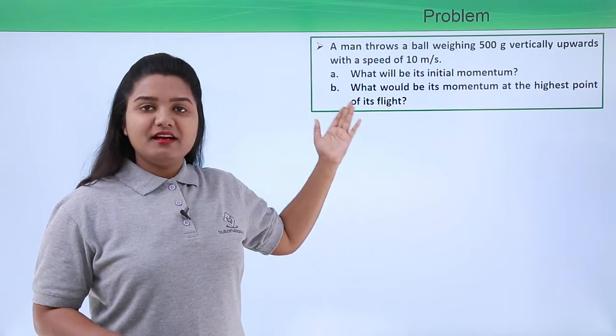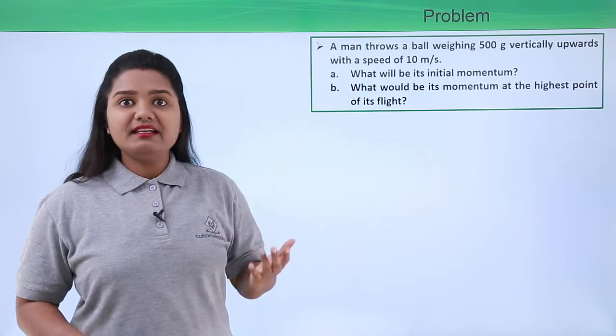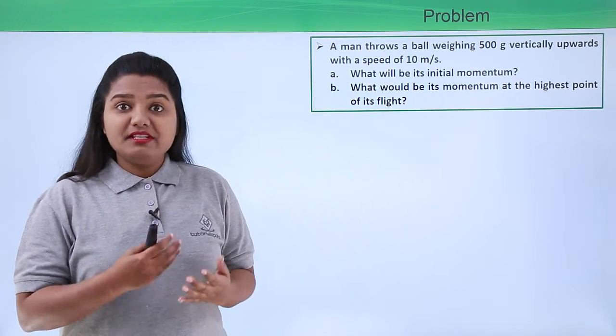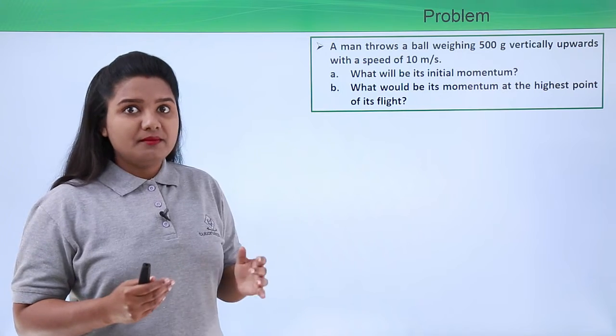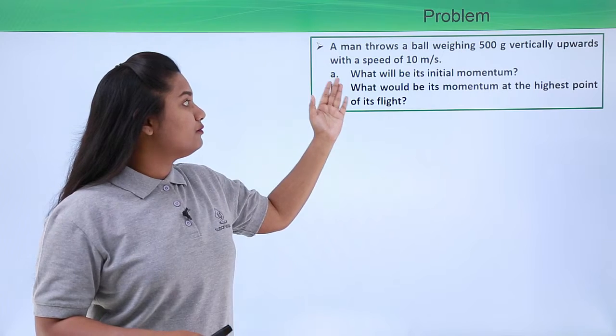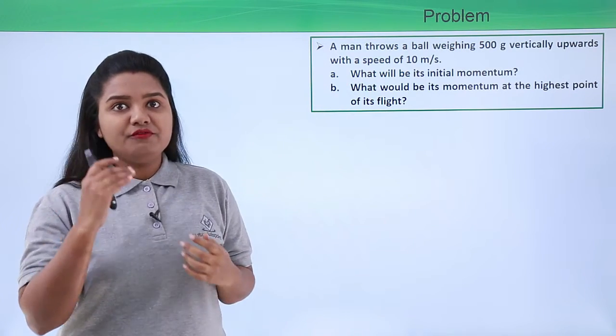Here is the problem which reads: a man throws a ball weighing 500 grams vertically upwards with a speed of 10 meters per second. We need to calculate what is the initial momentum of the ball, and the second thing we need to do is what would be its momentum at the highest point of flight.